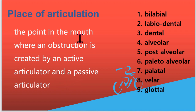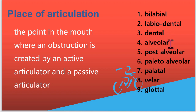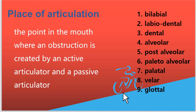We are looking at the point where the obstruction is created by an active articulator and a passive articulator. By this, we classify consonants into nine groups: bilabial, labiodental, dental, alveolar, post-alveolar, palato-alveolar, palatal, velar, and glottal. We will look at each of these and also study the consonant sounds of English.